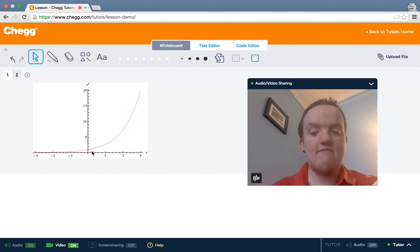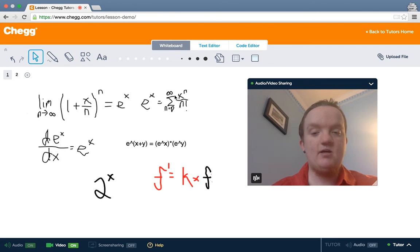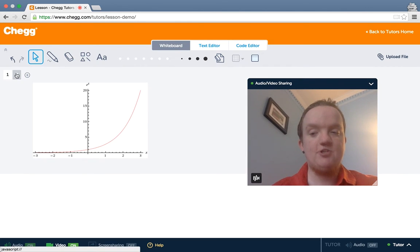But eventually e to the x is going to outgrow any polynomial function in x. We kind of see that where it's the sum of x to the n over n factorial. The n is arbitrarily high degree, so eventually that sum is going to exceed any power of x. So the exponential function grows faster than any polynomial, which becomes important in physics and in computer science when you're dealing with an exponential function.